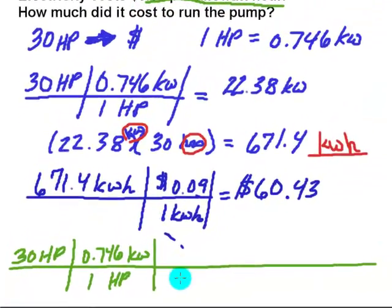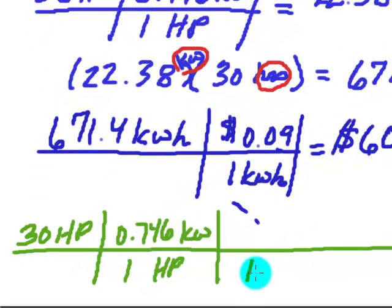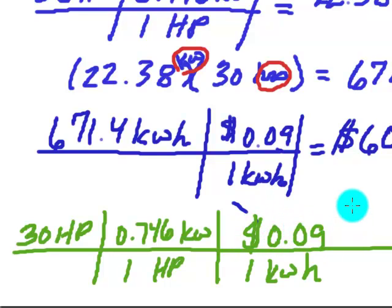So I'm going to say I've got kilowatts on the top. I'm going to put one kilowatt hour down here underneath. And I know that that kilowatt hour costs me nine cents.